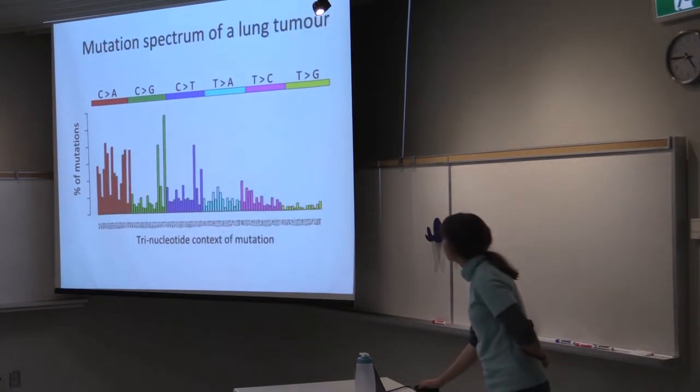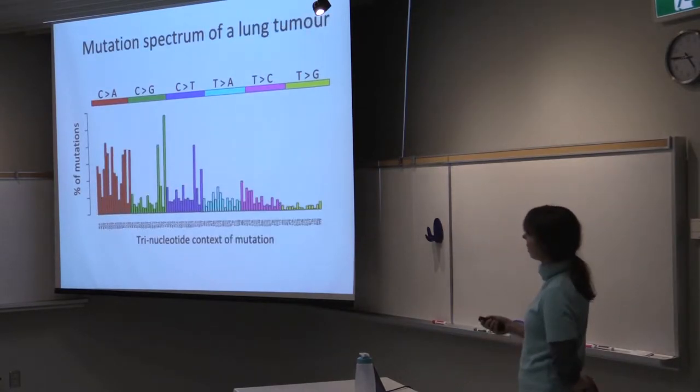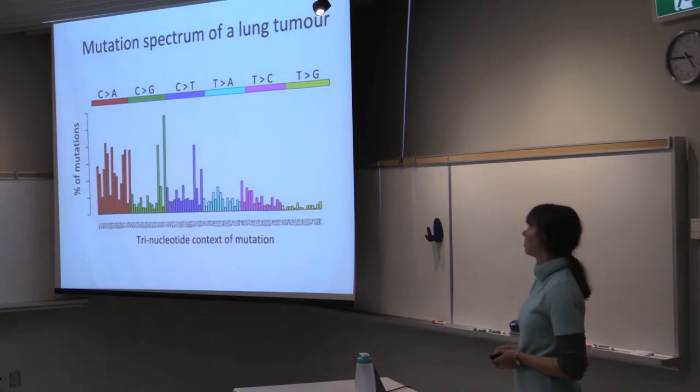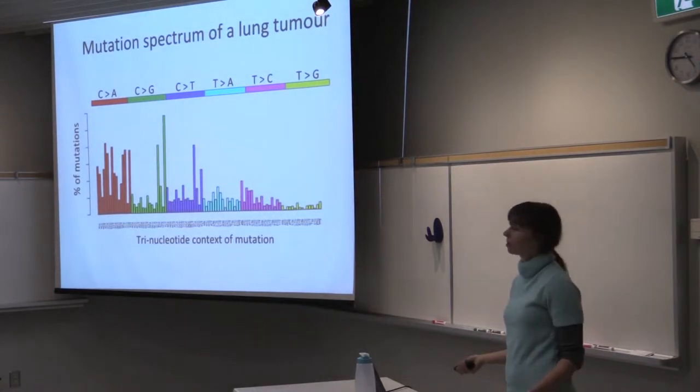But if we look at another example from lung cancer, we mostly see C2A and C2G mutations. And that happens because mutations arise from different sources.